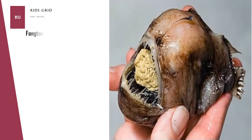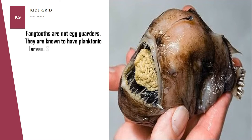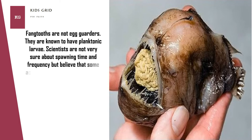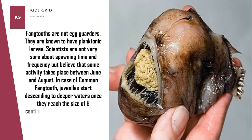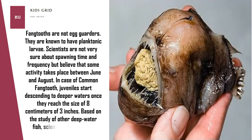Fangtooths are not egg guarders. They are known to have planktonic larvae. Scientists are not very sure about spawning time and frequency but believe that some activity takes place between June and August. In the case of common fangtooth, juveniles start descending to deeper waters once they reach the size of 8 centimeters or 3 inches. Based on the study of other deep water fish, scientists assume that fangtooths are slow growing.